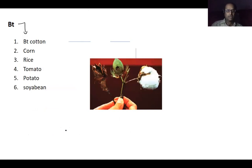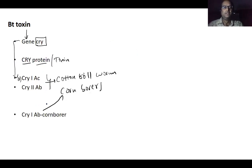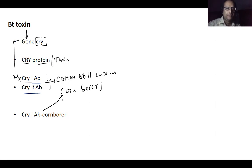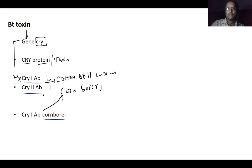Different BT crop varieties include Bt Cotton, Bt Corn, Bt Rice, Bt Tomato, Bt Potato, and Bt Soybean. The Bt toxin genes are called cry genes — written as CRY for the gene, or CRY in capitals for the protein/toxin. Two varieties are notable: Cry1Ac and Cry2Ab kill cotton bollworms, while Cry1Ab kills corn borers. This is important for the NEET examination.